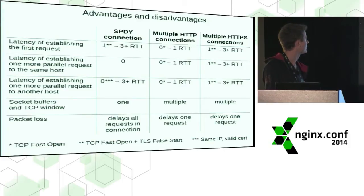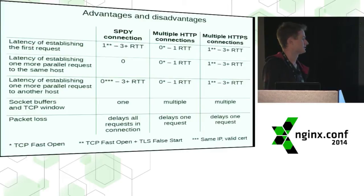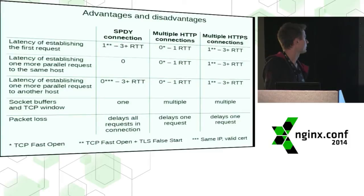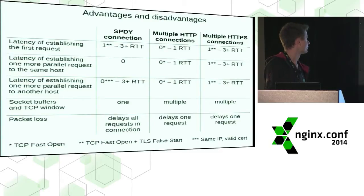Also note that RTT time acts as a multiplier to latency. So if your RTT time is really low, all of those three rows of the table are essentially zeros for all the cases.